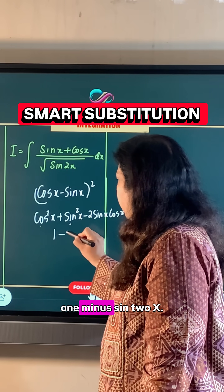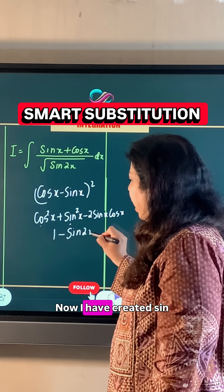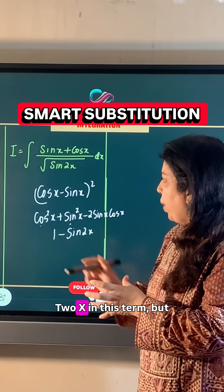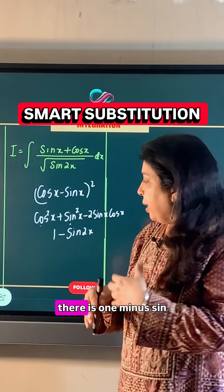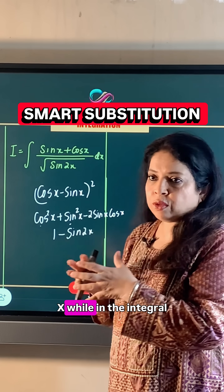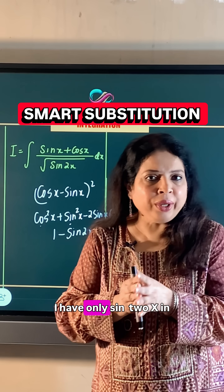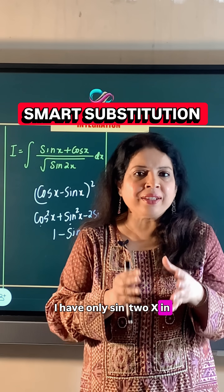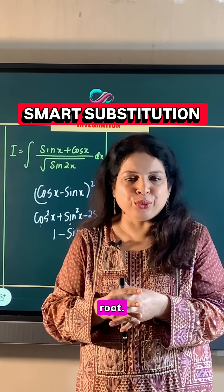So this is cos square x plus sin square x, which is 1 by the basic trigonometric identity: 1 minus sin 2x. Now I have created sin 2x in this term, but there is 1 minus sin 2x, while in the integral I have only sin 2x in the denominator inside the root.